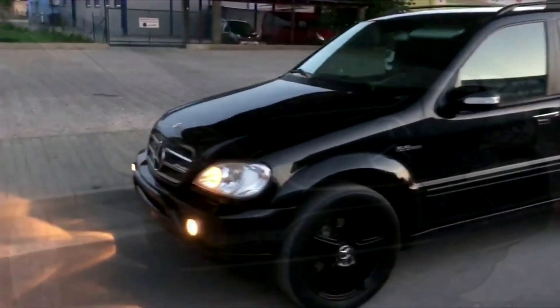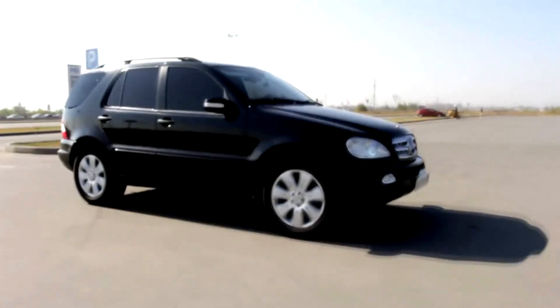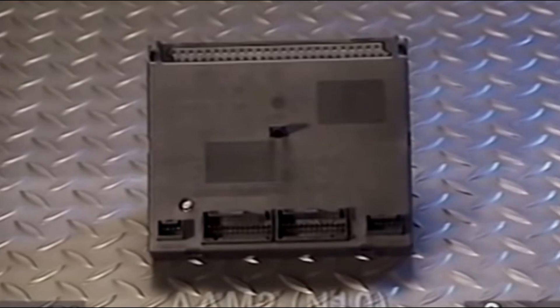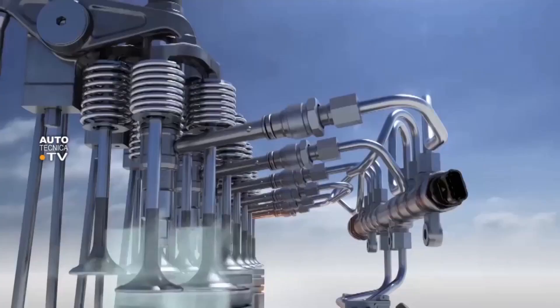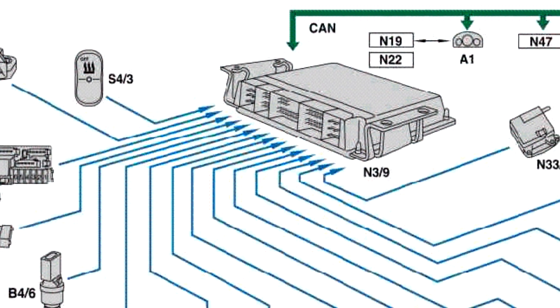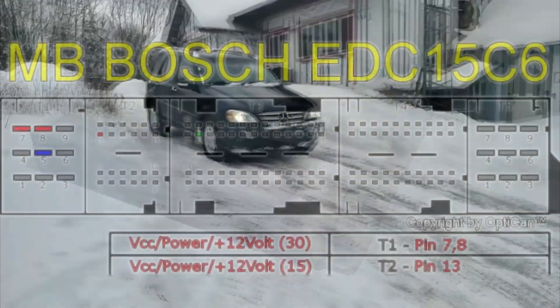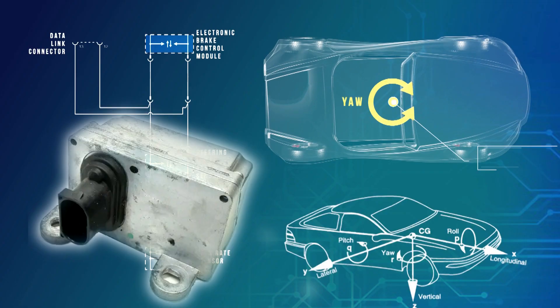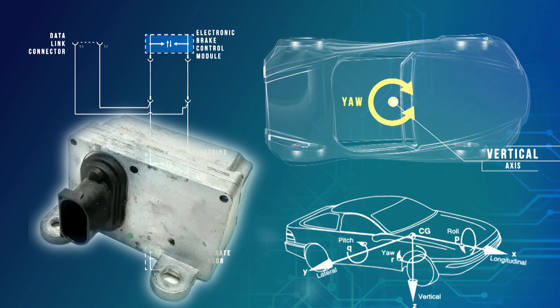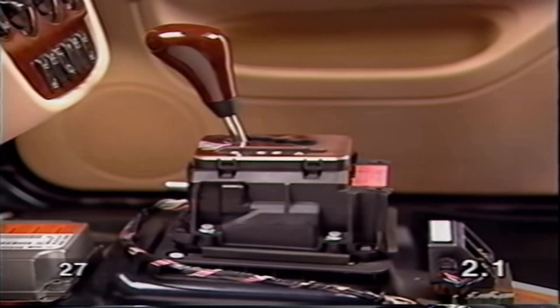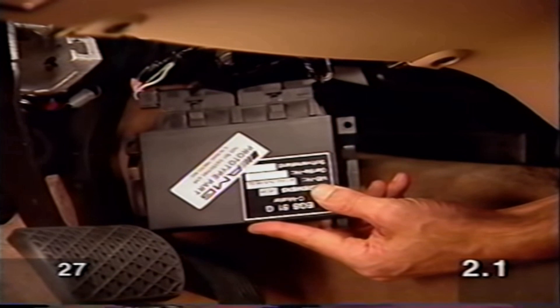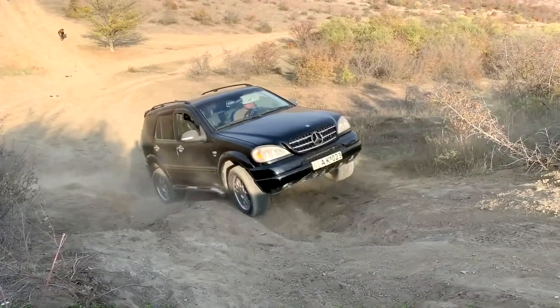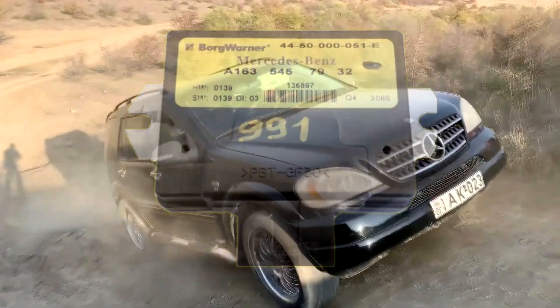In 2002, it underwent a facelift and thorough system changes, especially in terms of electronic systems. The common rail direct injection system was managed by a CDI controller known as the Bosch EDC-15 C6. The ABS/ESP anti-lock brake system handles sensors for longitudinal and lateral acceleration on the CAN network. The automatic gearbox uses an EGS-5 control unit, and there is a 4x4 drive controller for the transfer case, an electronized gear selector, and automatic air conditioning.